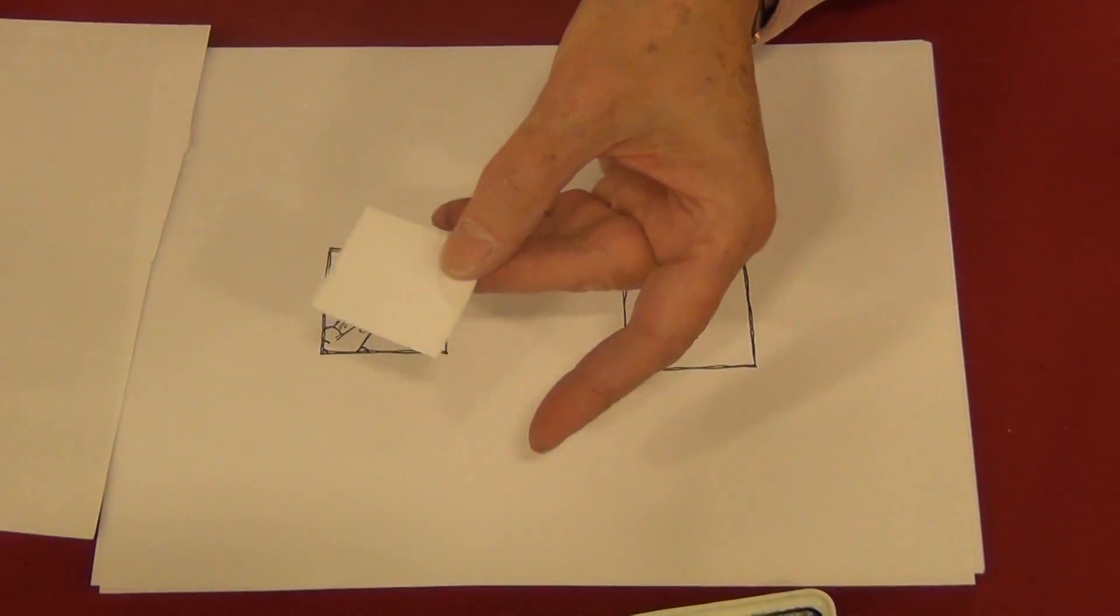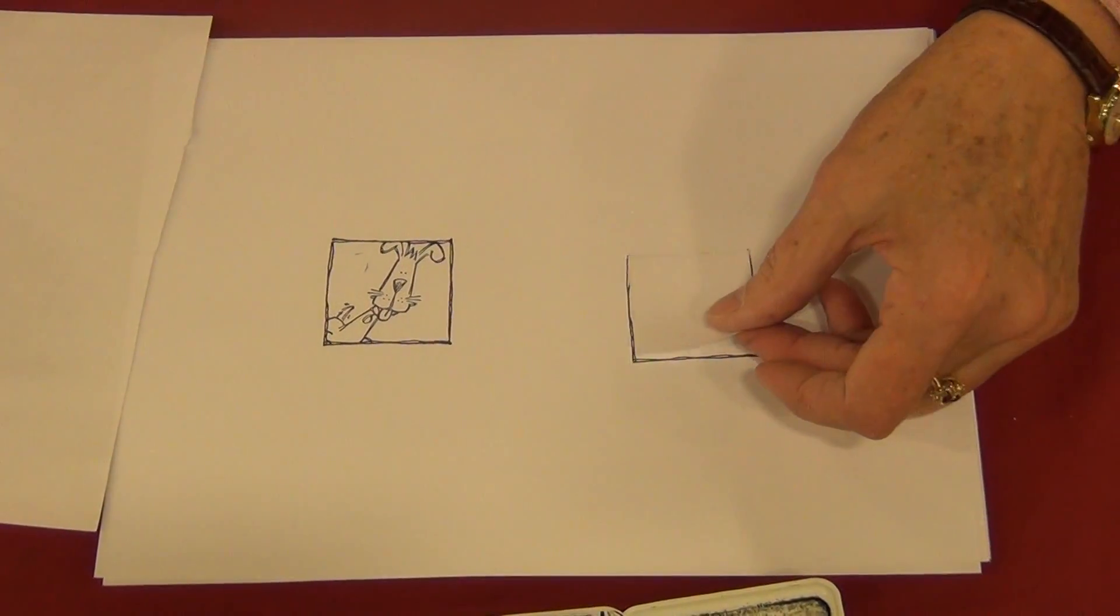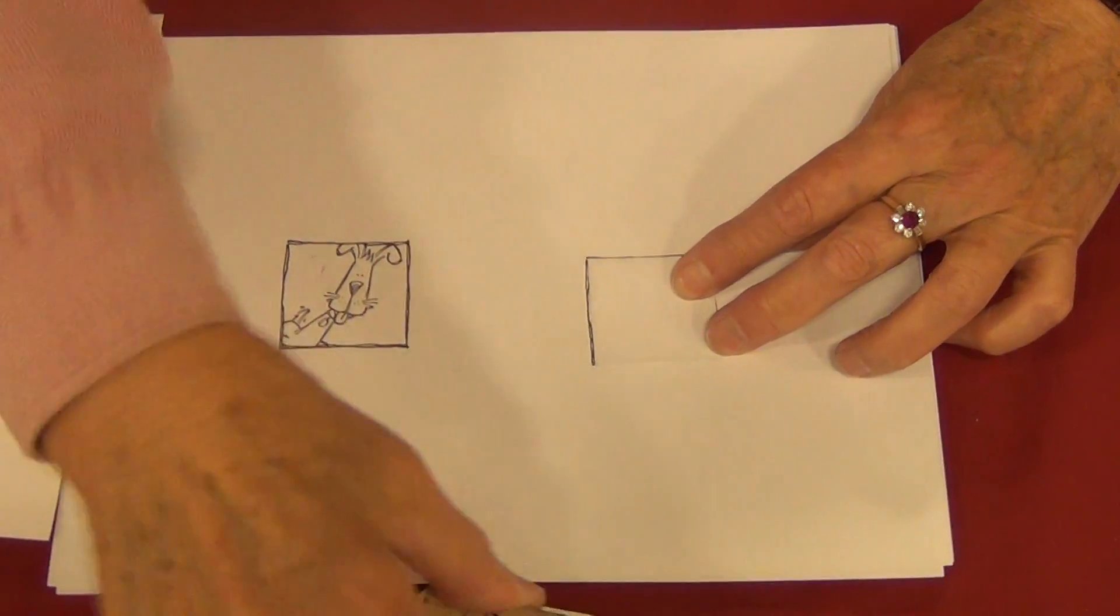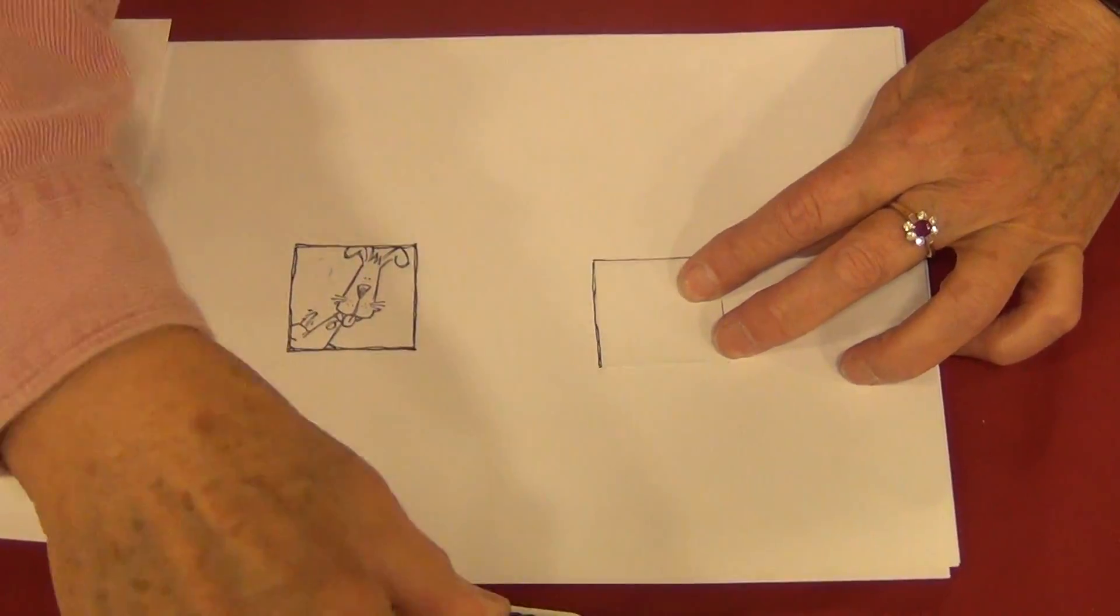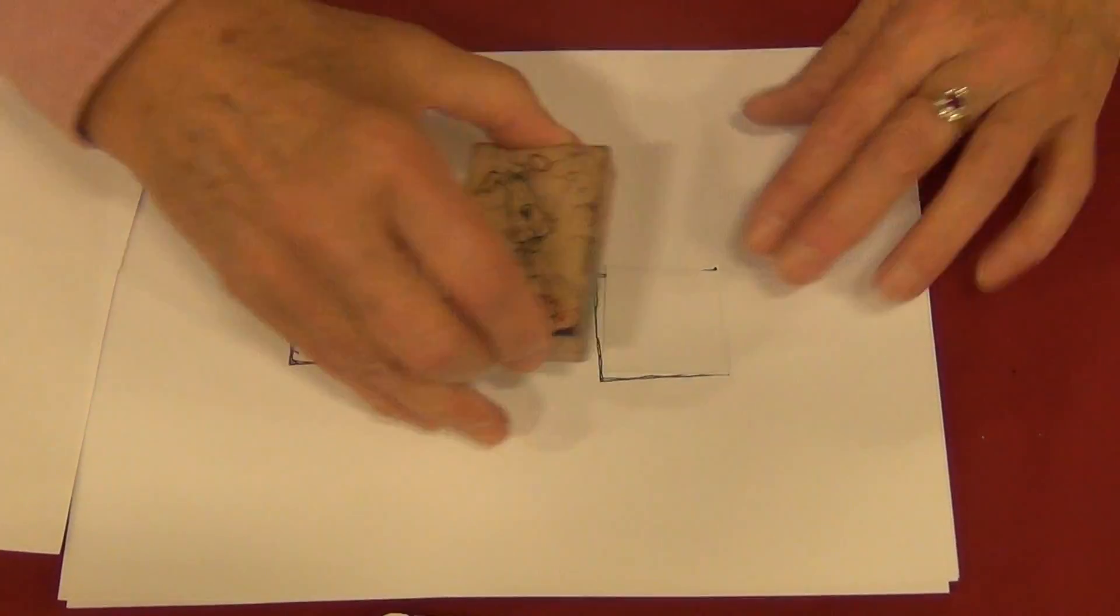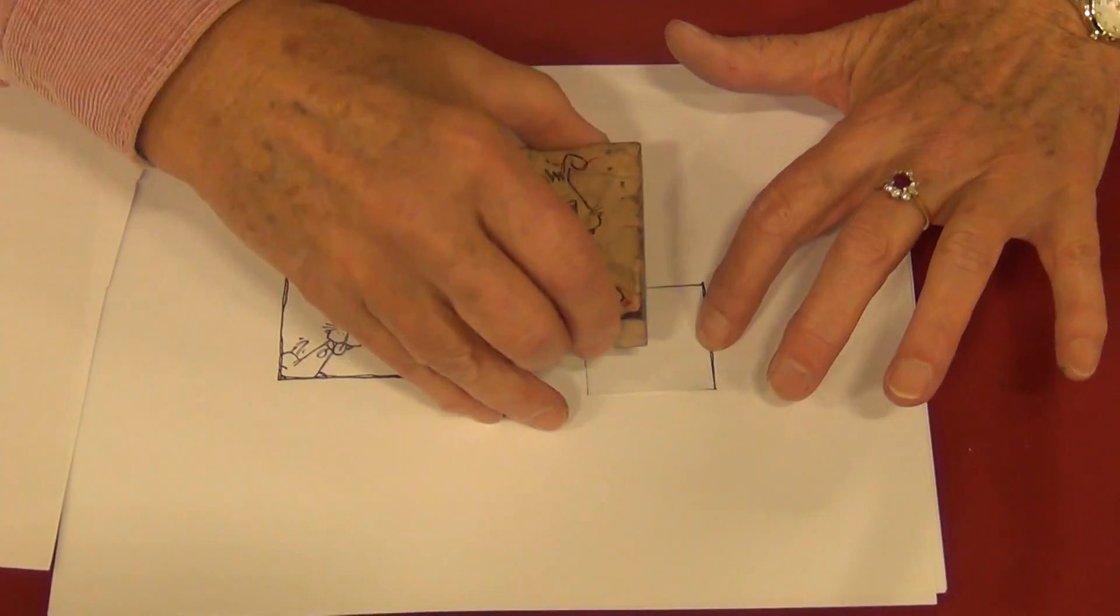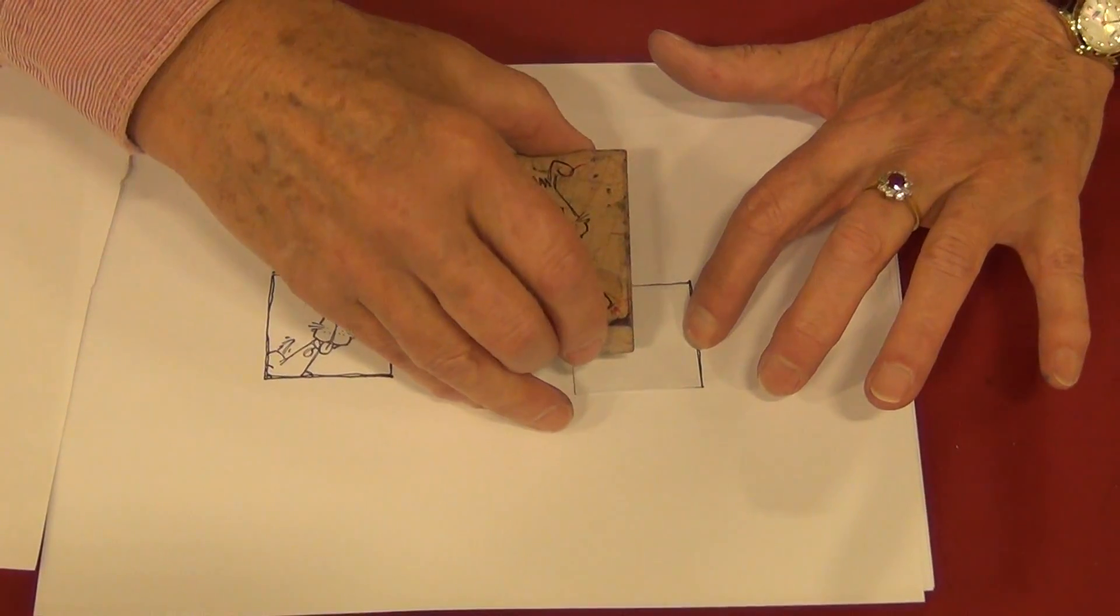I'm going to take that piece I cut out and lay it over this square, taking my little puppy again. Please forgive all my pounding here. Make sure I hold it still. We're at a show so you're going to hear background sounds.